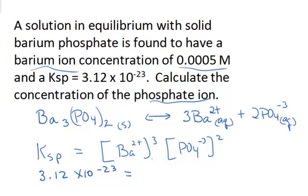And that's going to equal the barium ion concentration, which is given to us. So rather than allowing it to be X, all we have to do is put in the barium ion concentration. It's 0.0005 molar. And in the expression, of course, that concentration would be cubed times whatever the phosphate anion concentration is squared.